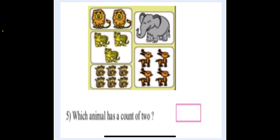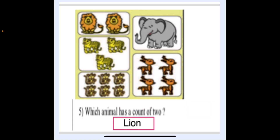Our next question is: which animal has a count of two? The answer is lion — we have only two lions in the zoo. I hope you have understood classifying and sorting of data. You will complete page number 76 in your maths textbook. Thank you.